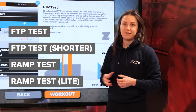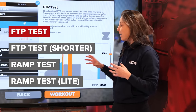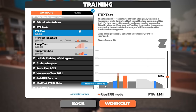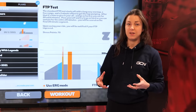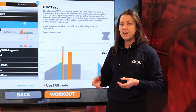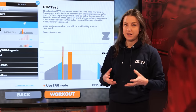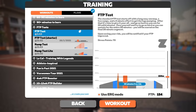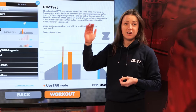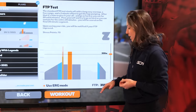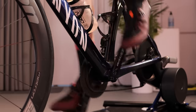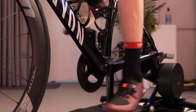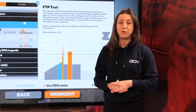First up, the FTP test. You start off with a nice thorough warm-up to get you ready for the effort, and then you move on to a 20-minute effort. The aim is to sustain the maximum power you can for that duration. You want it to be a nice linear effort — no peaks or drops off in power — followed by a nice cool-down. The FTP test is the most common method of testing and is suitable for most people.